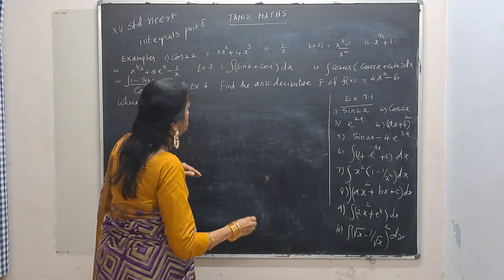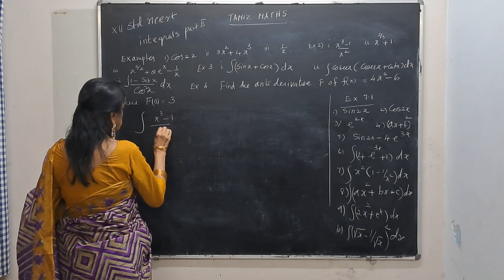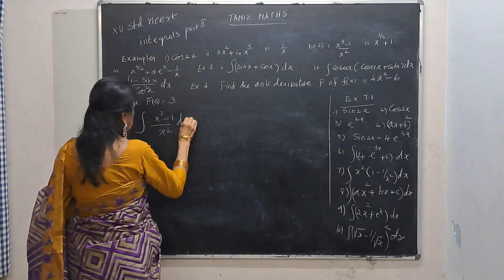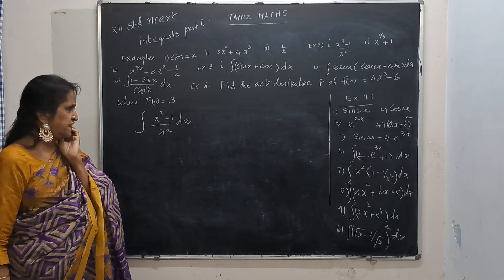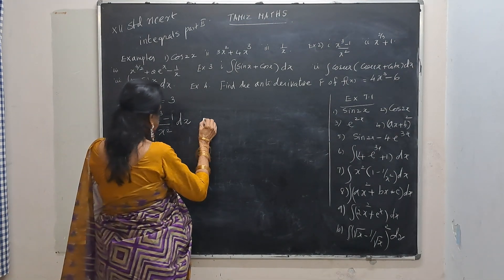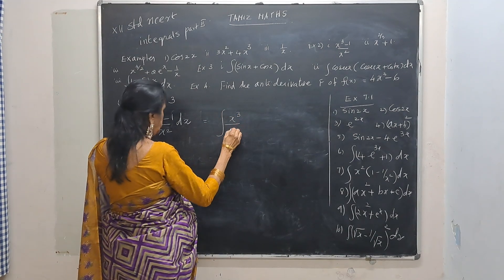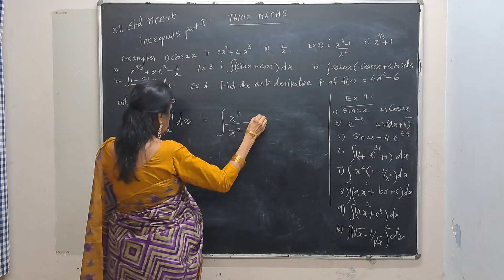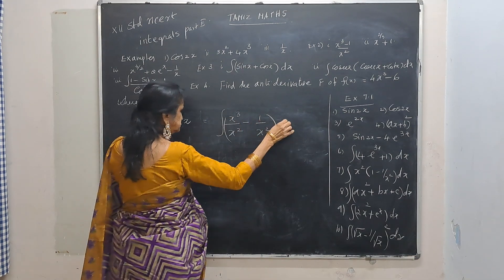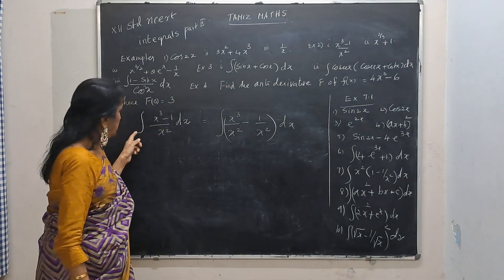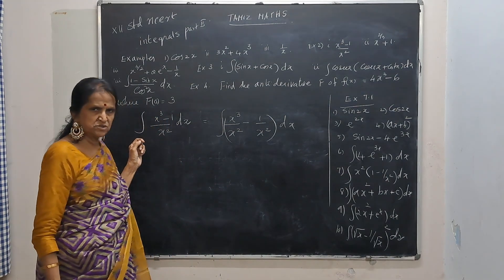Next: integrate x cubed minus 1 by x squared dx.